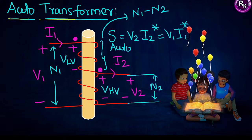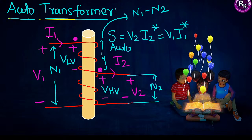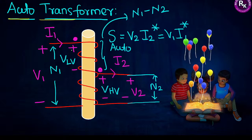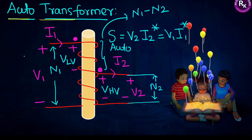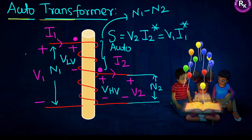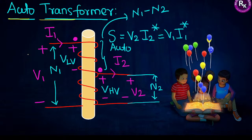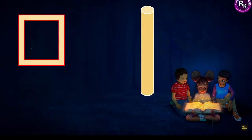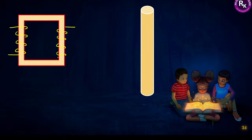In the examination, the most common question is: a two-winding transformer will be given and you will be asked to find the KVA rating of the auto transformer. Let us design the auto transformer from the two-winding transformer. A two-winding transformer has two windings — that is why it is named so. Let me explain how to design it.